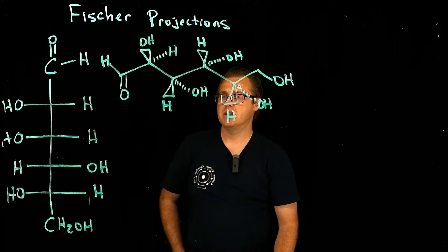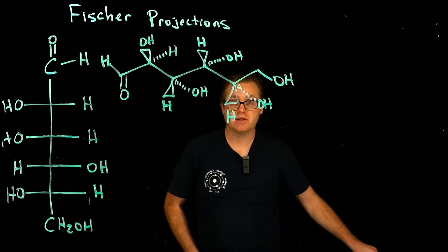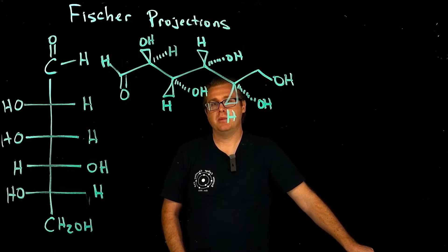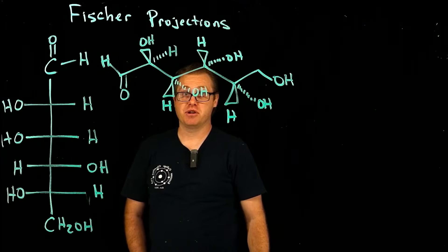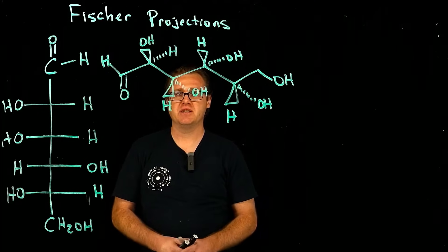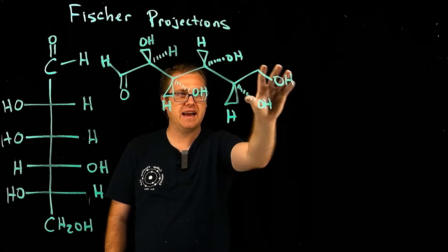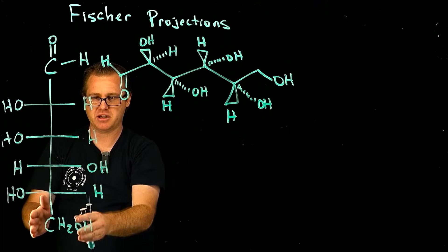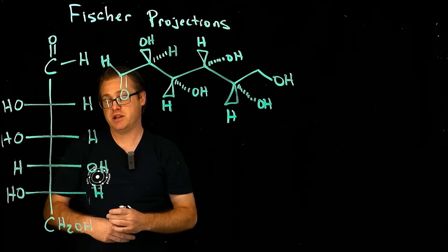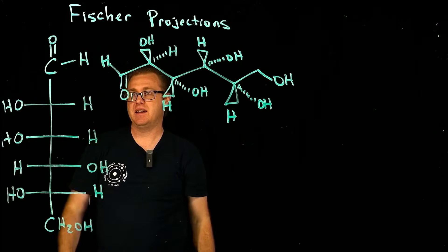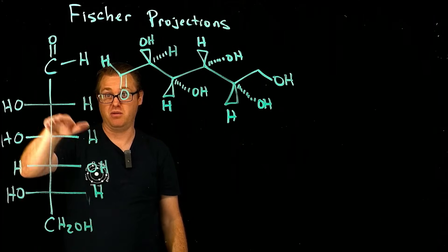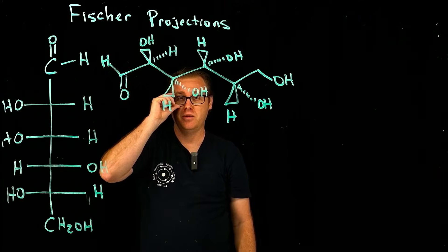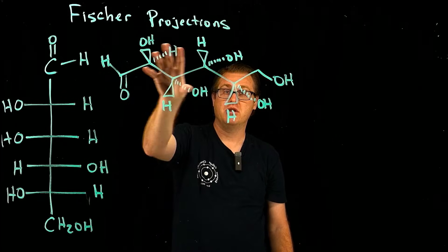We're going to look at molecules in a different way. We've looked at zigzag structures, we've looked at Newman projections, and now we have what's called a Fisher projection. Fisher projections take a molecule in zigzag form and convert it into this. The way I keep Fisher projections and Newman projections separate and distinct is that a Fisher projection looks like fish bones — that's the visualization.